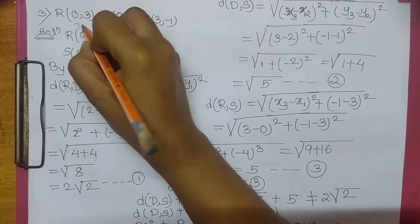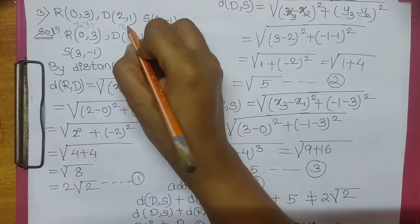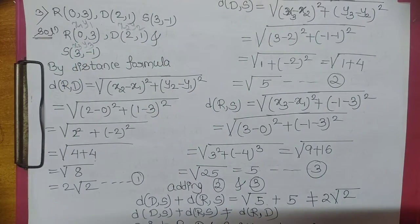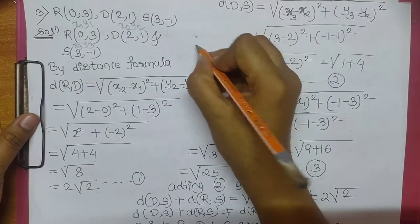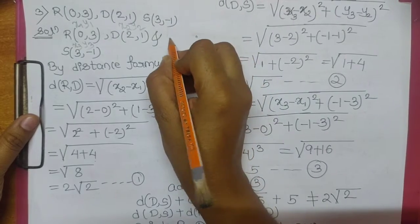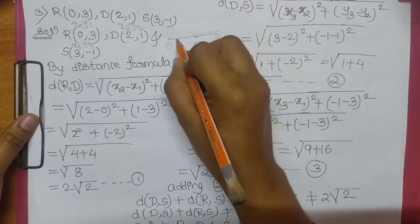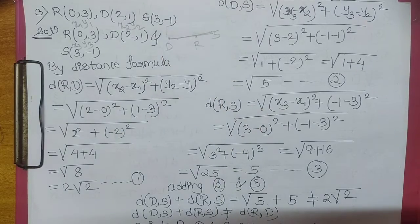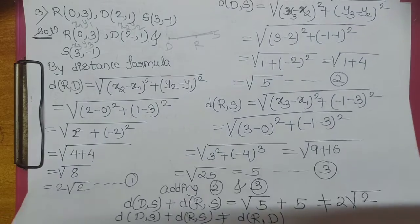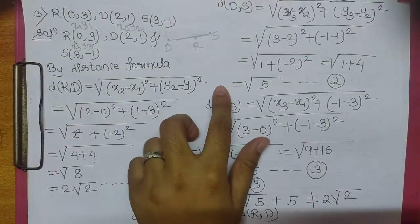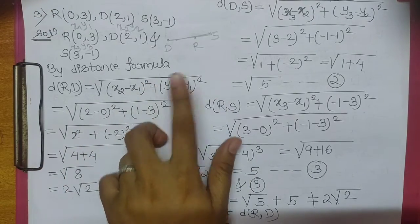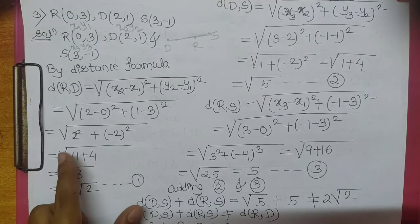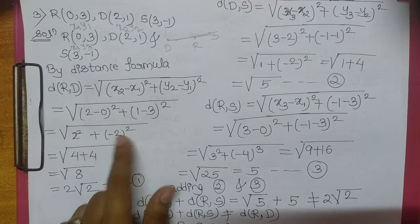R kya coordinate hoongi: x1, y1. D kya: x2, y2. S kya: x3, y3. Sabse pahle haem distance RD find karenge. RD = square root of (x2 minus x1) ka square plus (y2 minus y1) ka square. x2 = 2, x1 = 0, y2 = 1, y1 = 3. 2 minus 0 = 2, 1 minus 3 = minus 2.